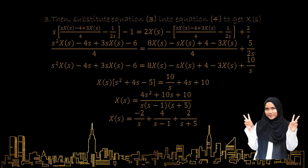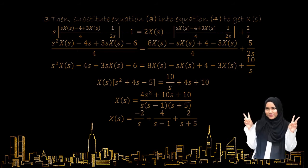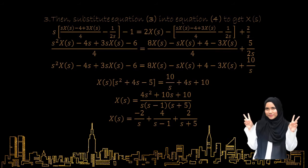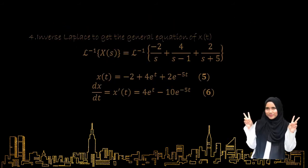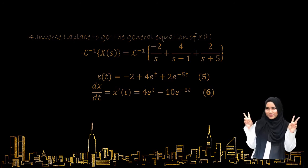We substitute equation 3 into equation 4 to get X in terms of S. After substitution, we obtain X in terms of S equal to negative 2 over S, plus 4 over (S minus 1), plus 2 over (S plus 5). To get the general solution X, we apply inverse Laplace, and label it equation 5. Then we differentiate the general solution X and label it equation 6.